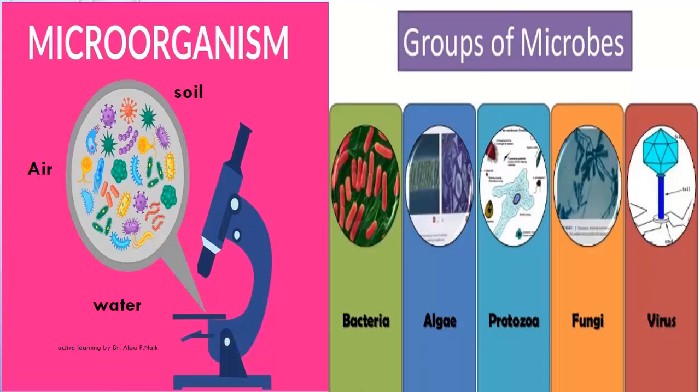After fungi, there are microorganisms. We call them microorganisms because they are visible only under a microscope. They are present in water, air, and soil, and are divided into bacteria, algae, protozoa, fungi, and virus.